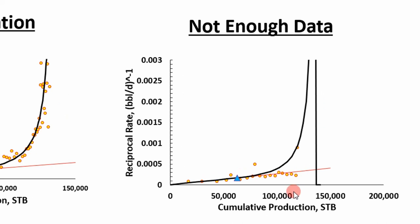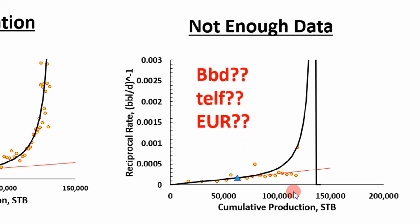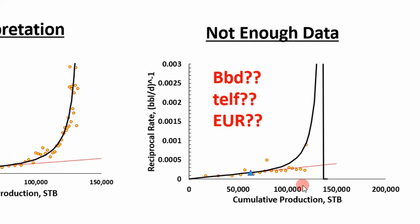We have to fit distributions to data. For our case, we're interested in getting the boundary dominated and the time to end the linear flow — getting data from different wells in this area, then mathematically modeling those with distributions, and ultimately using that to run Monte Carlo simulation to predict EUR. I'm going to show how to do that today.